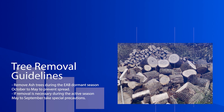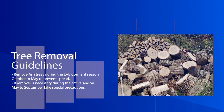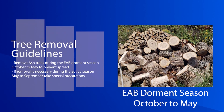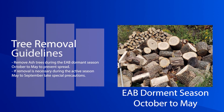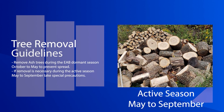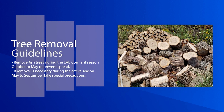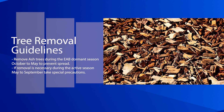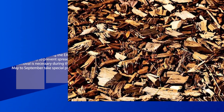Follow the Minnesota Department of Agriculture guidelines for tree removal. Remove ash trees during EAB dormant season, October 1st to May 1st, to prevent the spread. If removal is necessary during the active season, May 2nd to September 30th, take special precautions such as chipping the wood to less than an inch on site.